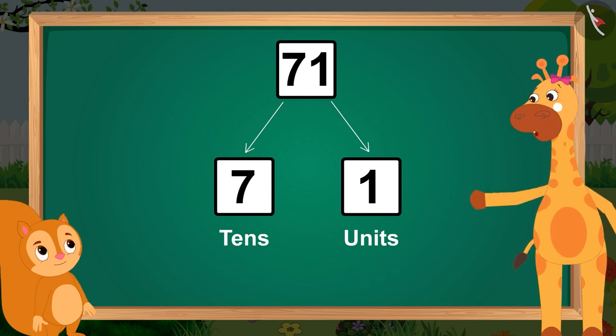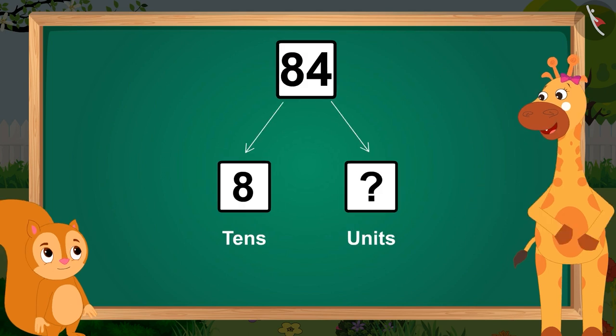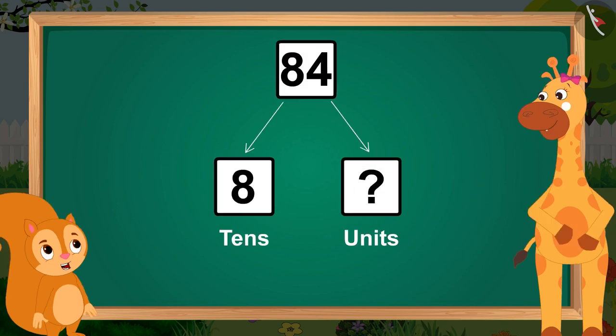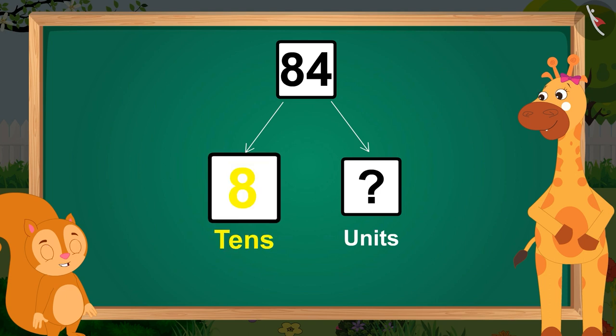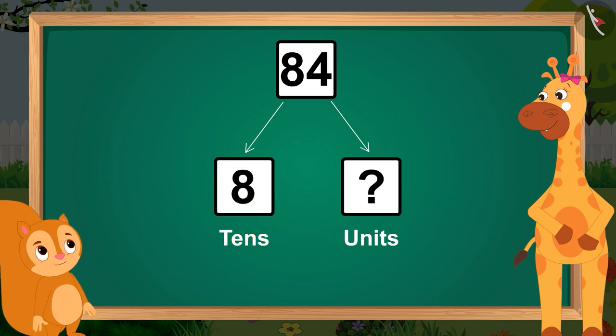In the next question, only one box is empty. The number is eighty-four. This will be formed by eight tens, or eighty, which is already given, and from four units.